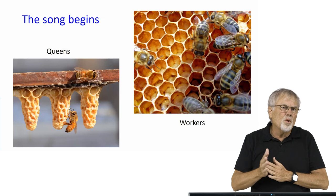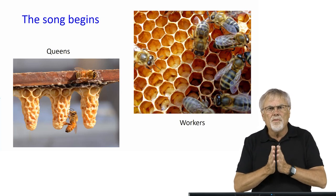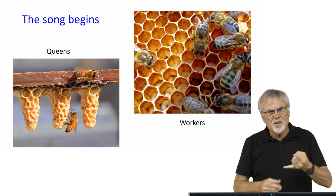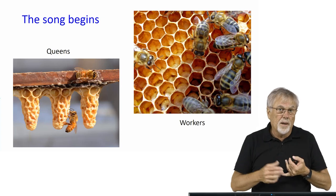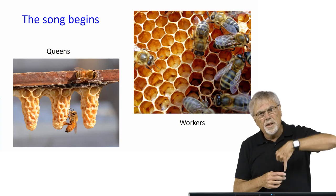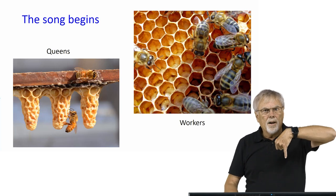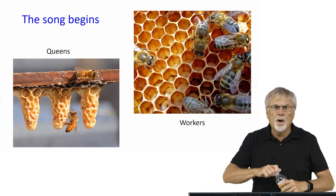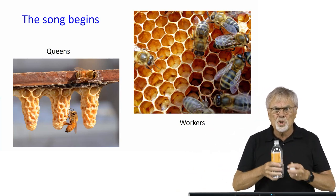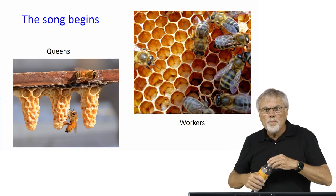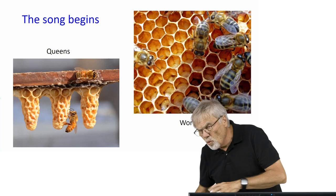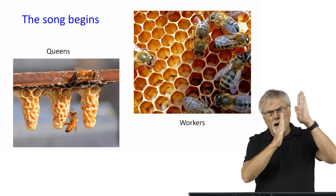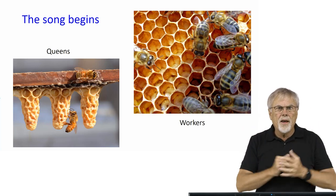The song begins with the construction of the queen cells. The queen cells are very different from the worker cells. As you can see on this figure, the queen cells are larger — about the size of a peanut. They look a lot like a peanut and they hang vertically upside down on the other parts of the comb. The workers are raised individually in hexagonal shaped cells, shown on the right — one individual per cell — and these cells are oriented horizontally, not vertically. But both of them are fed by nurse bees.